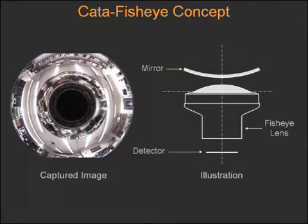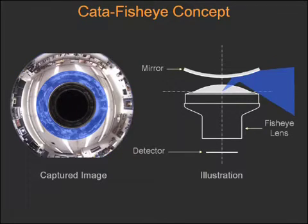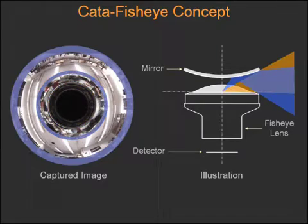The catafisheye camera captures the desired panoramic field of view in two parts. The upper part is obtained directly by the fisheye lens and the lower part after reflection by the curved mirror. These two parts of the field of view have a small overlap that is used to stitch them into a single seamless panorama.